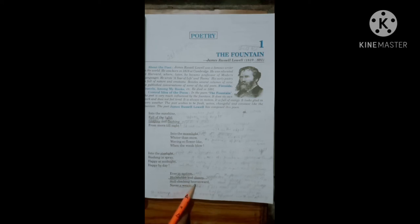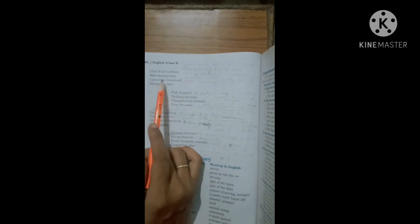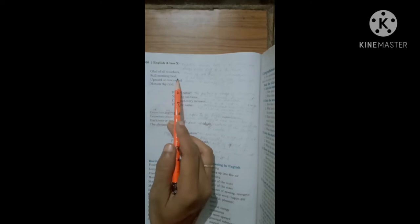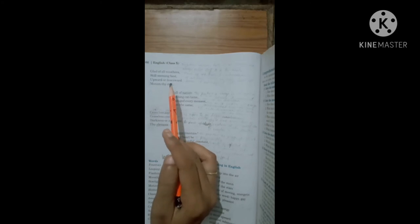Now our fifth para: Glad of all weathers, still seeming best, upward or downward motion thy rest. The explanation: The poet describes that the fountain remains happy in all the seasons and always appears to be the best. It continues to move up and down and never takes rest because its motion itself is its rest.